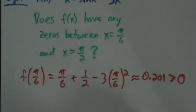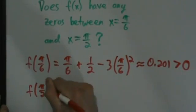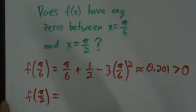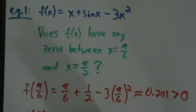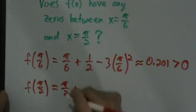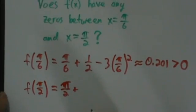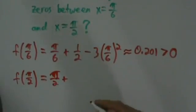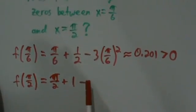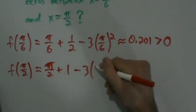Now we check the other value, f(π/2). f(π/2) = π/2 plus sine of π/2, which is just 1, and then we have minus 3 times (π/2)².